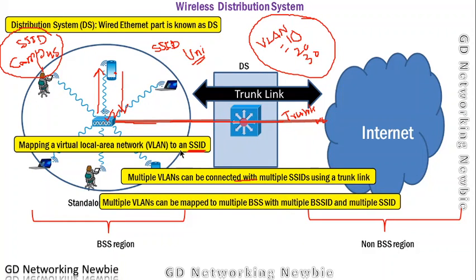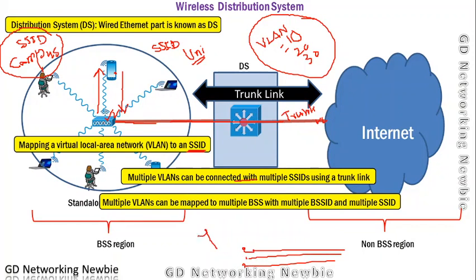Multiple VLANs can be mapped to multiple SSIDs — each with a different identifier. For example, VLAN 10, VLAN 20, and VLAN 30 each want to go to a different SSID: SSID 1, SSID 2, and SSID 3. Who performs this job? It is the job of the access point. This is how we extend the network using the distribution system.